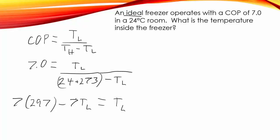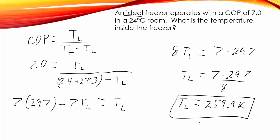So, I can bring that TL, this minus 7 over here, and it's going to be plus 7. So, I'm going to end up with 8 TL equals 7 times 297. So, TL equals 7 times 297 divided by 8. Hey, that wasn't too painful. And throw that puppy in your calculator, and you get 259.9 Kelvins.